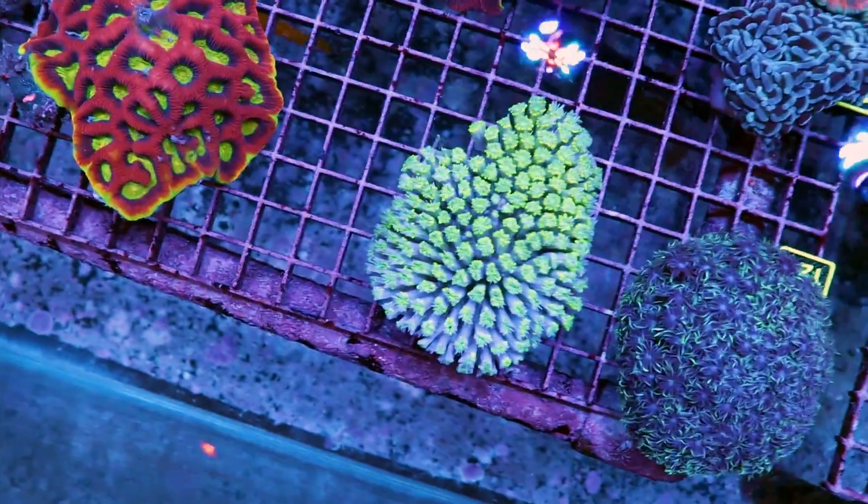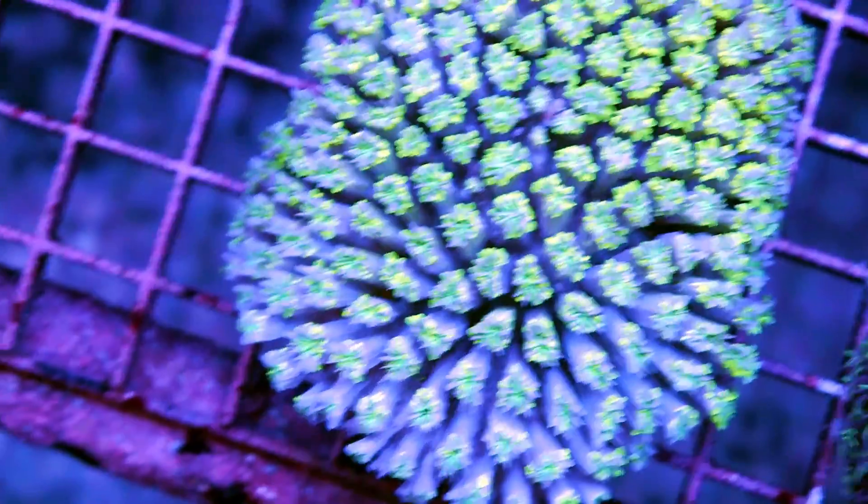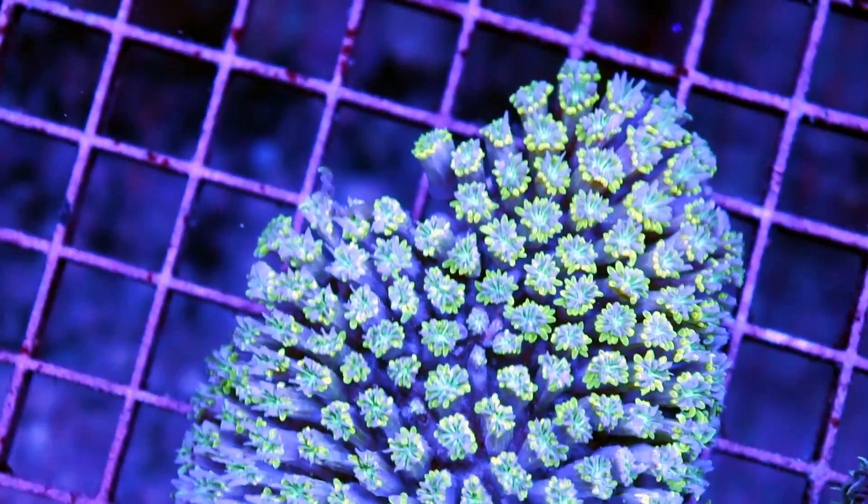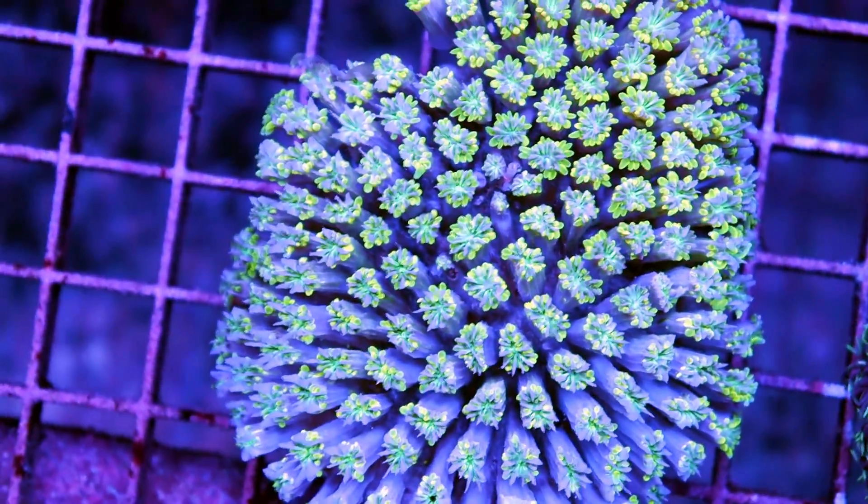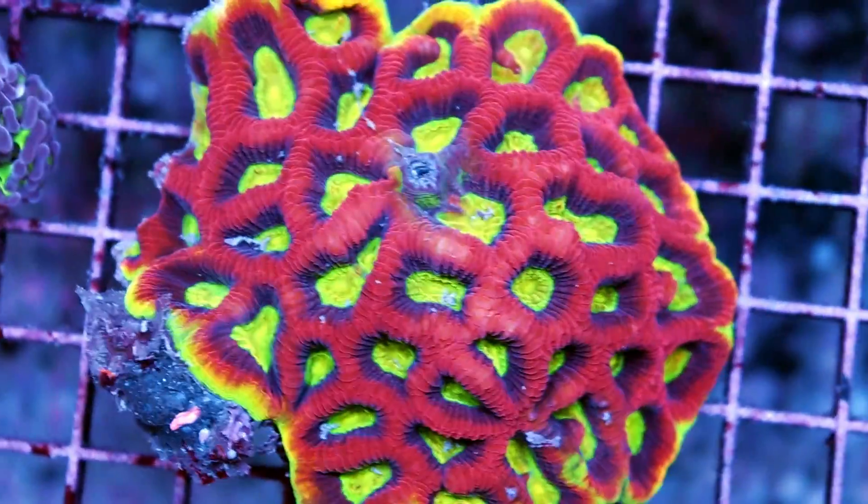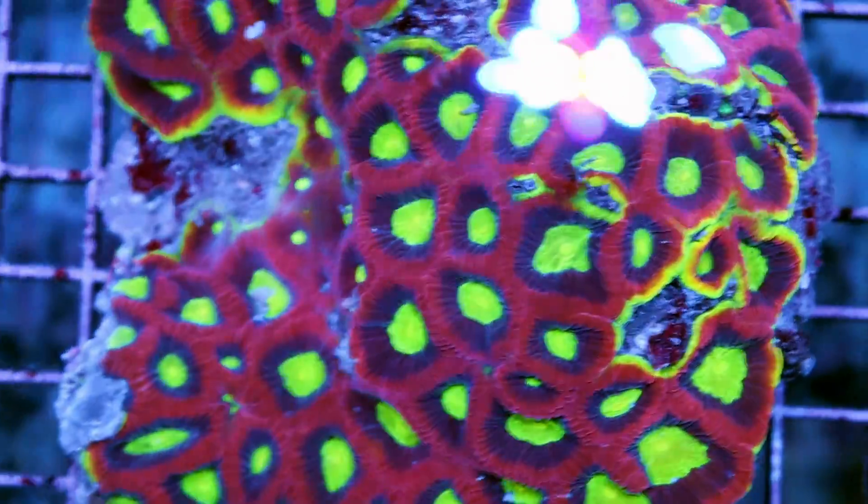There's a Galaxia that came in. Unfortunately does not look too good right now, hopefully it'll rebound. This side is looking a little bit better, a little bit bleached. The bag it came in was a little bit murky. This Favia though is looking incredible. That's the Dragon Soul Favia. This is a nice big colony right here, and some pipe organ.